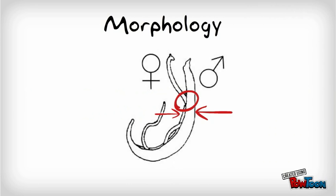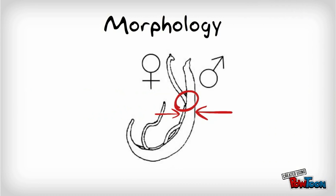Starting with the morphology: adult worms are 10–20mm long, with the male having an unusual gynaecophoral canal shape, with marginal folds forming a canal in which the slender female worm resides. Unlike other trematodes, the Schistosomes have separate sexes.